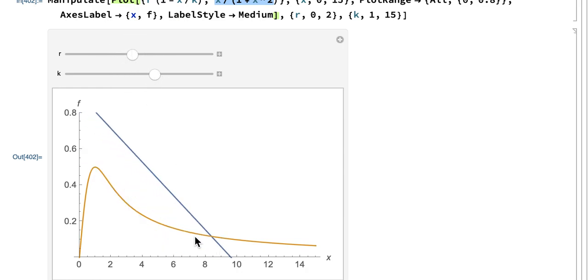So either I have a single population that's stable and larger, I have a single population that's stable and smaller, or I have bistability. And whether I have a large population or a small population depends on the history of my population.